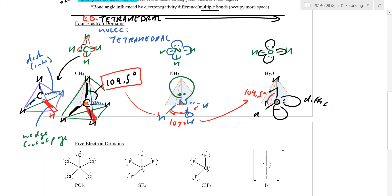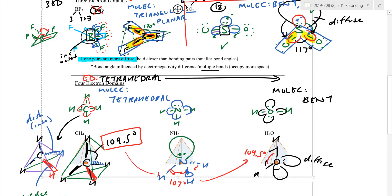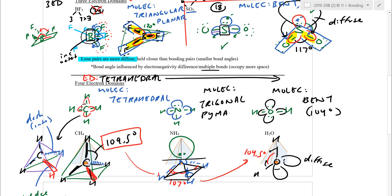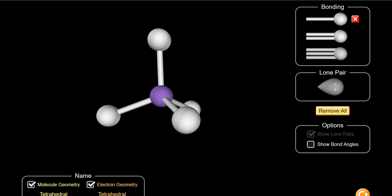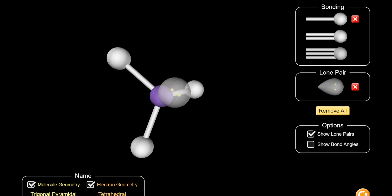A memory trick: start at 109.5° (like the radio station), subtract about 2.5° for each lone pair — that gets you to ammonia at ~107° and water at ~104.5°. The molecular geometry of water is bent. This bent is different from the SO2 bent — this one starts from 109.5° and is around 104°, while SO2 was bent from the trigonal planar base at around 117°. For ammonia, the molecular geometry is called trigonal pyramidal — a slightly flattened tetrahedron with a triangular base and a pyramid shape.